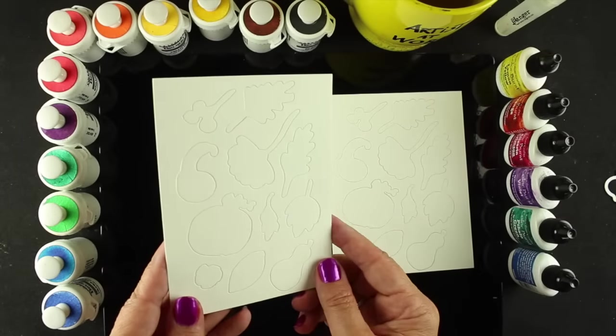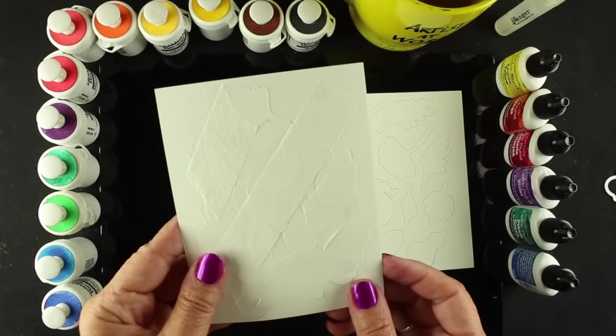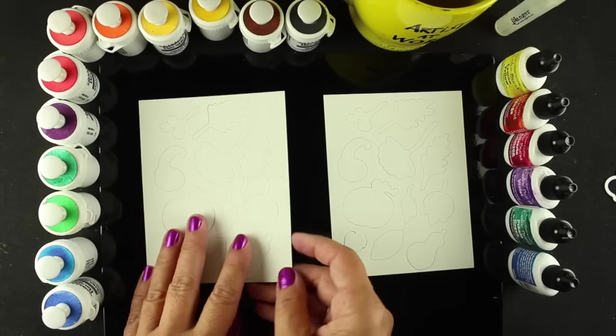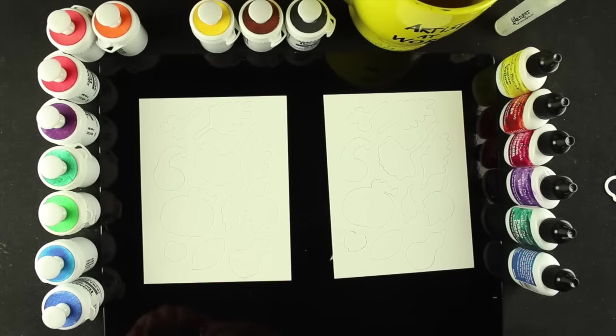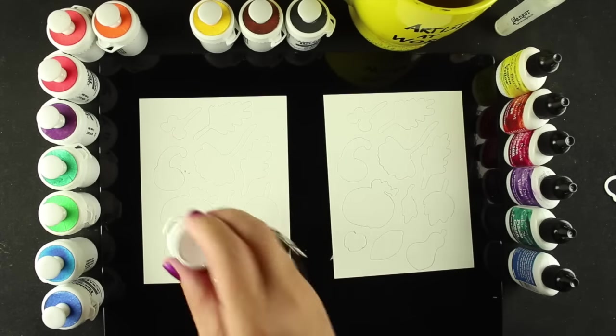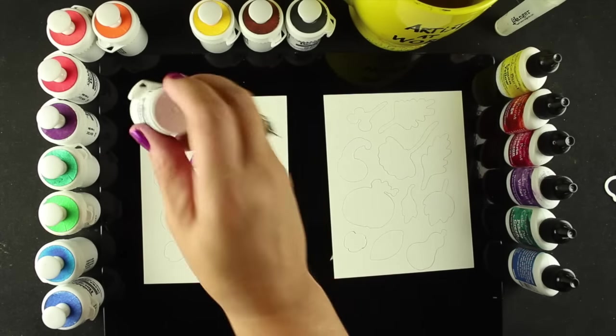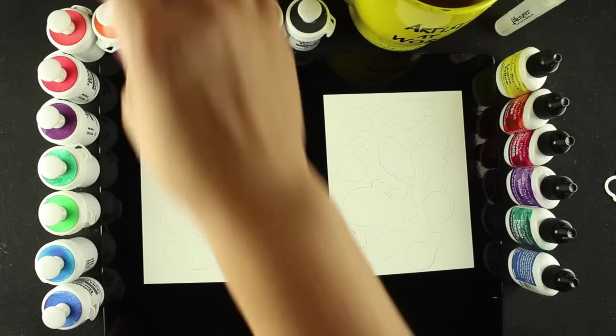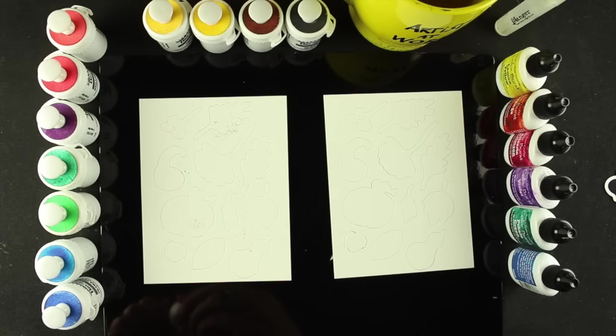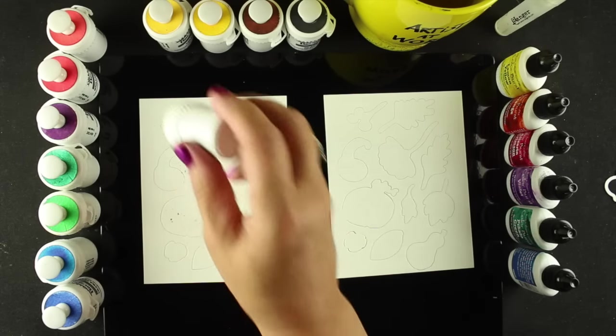All right, now here is something I did. I took an entire sheet of die cuts. These are from an Ellen Hudson set that was just released, the Thankful die cuts. And I taped on the back with some washi tape just to hold them in place so that I could spritz the whole thing. Now you could do each one individually, but I thought it would be a little bit faster and easier if I did the whole sheet at once.